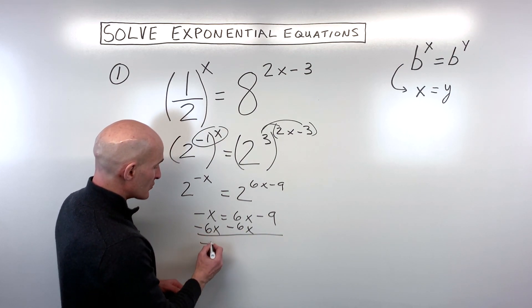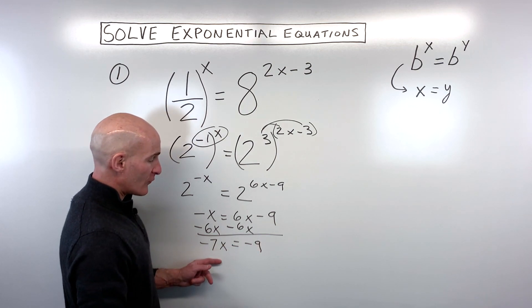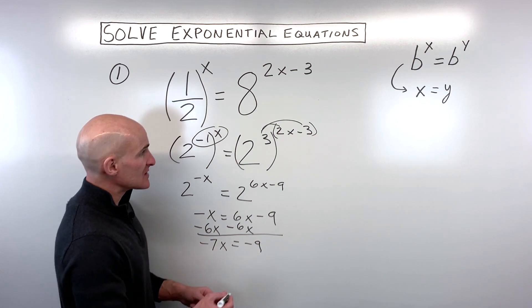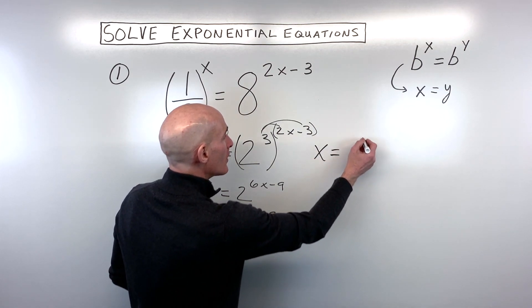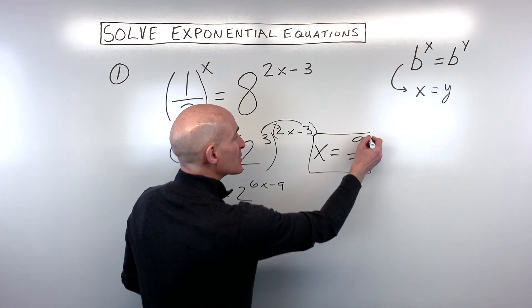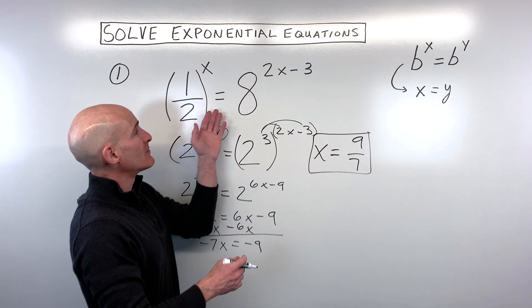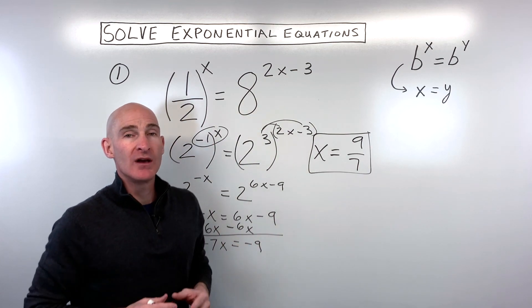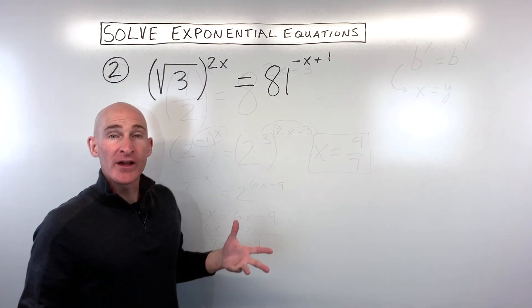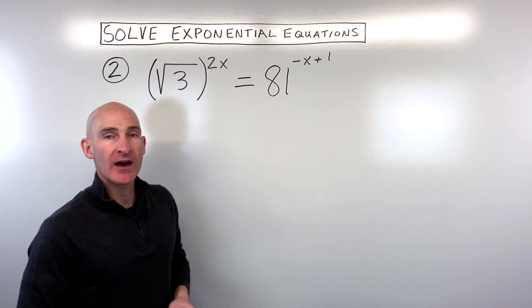That comes out to negative seven x is equal to negative nine. If we divide both sides by negative seven, you can see that x is coming out to positive nine sevenths. If you want to check your answer you can put it back in for x, simplify or use a calculator, and make sure that both sides are equal to one another.